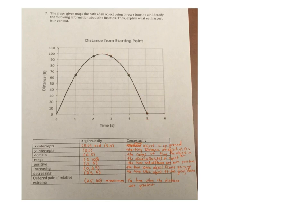And then order pair of relative extrema, it has a maximum. That's what that is asking you for at 2.5 and 100. And this is time when the distance was the greatest, like it was the highest it could be, in the time that corresponds.